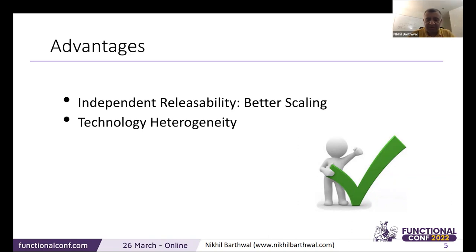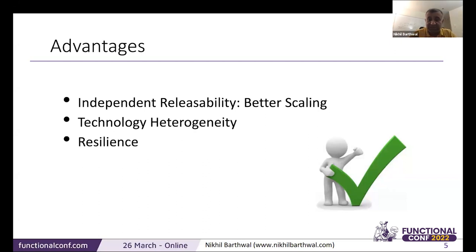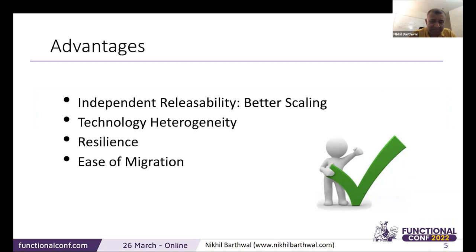There's technology heterogeneity — different services can use Scala, Java, C++, or .NET. You don't have to stick with one technology stack because microservices communicate using lightweight protocols. There's also a lot of resilience built in. If one service fails, the rest are still working, whereas in a monolithic, one exception can bring down the entire system. And there's ease of migration — you can migrate services one by one, reducing risk. You don't have to rewrite everything at once.